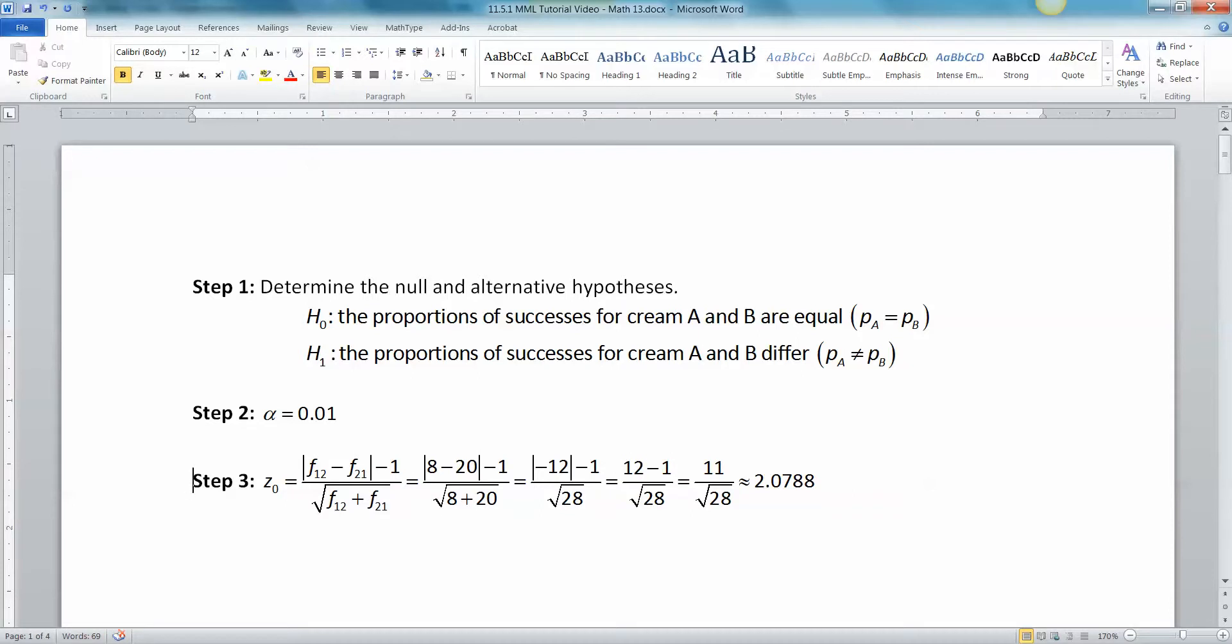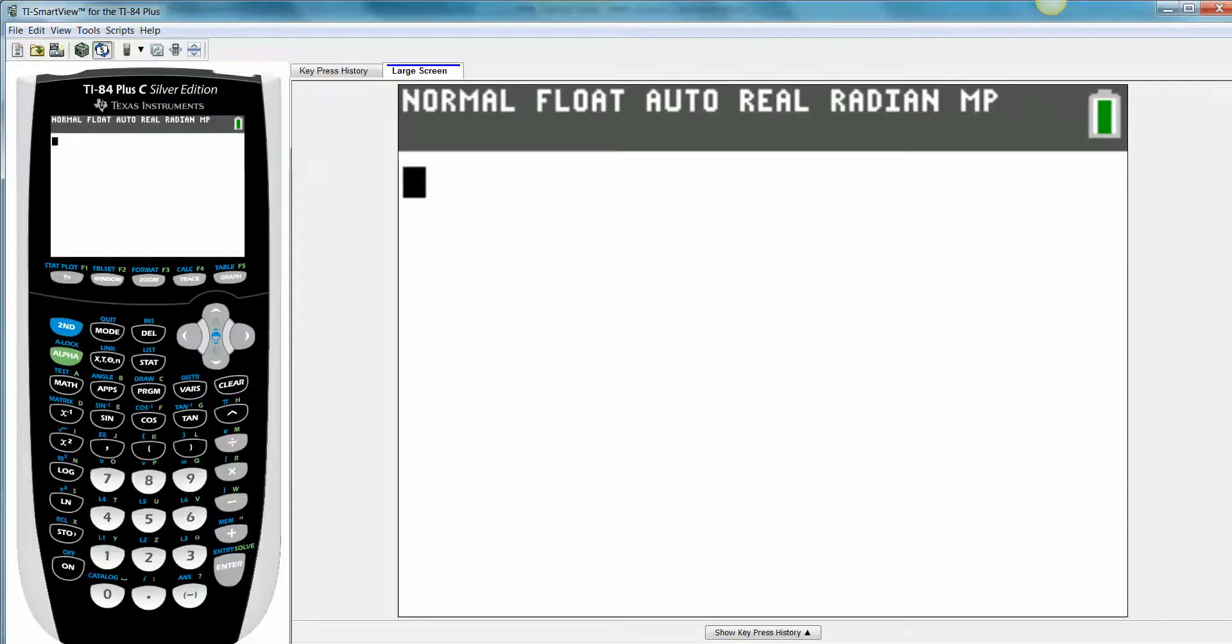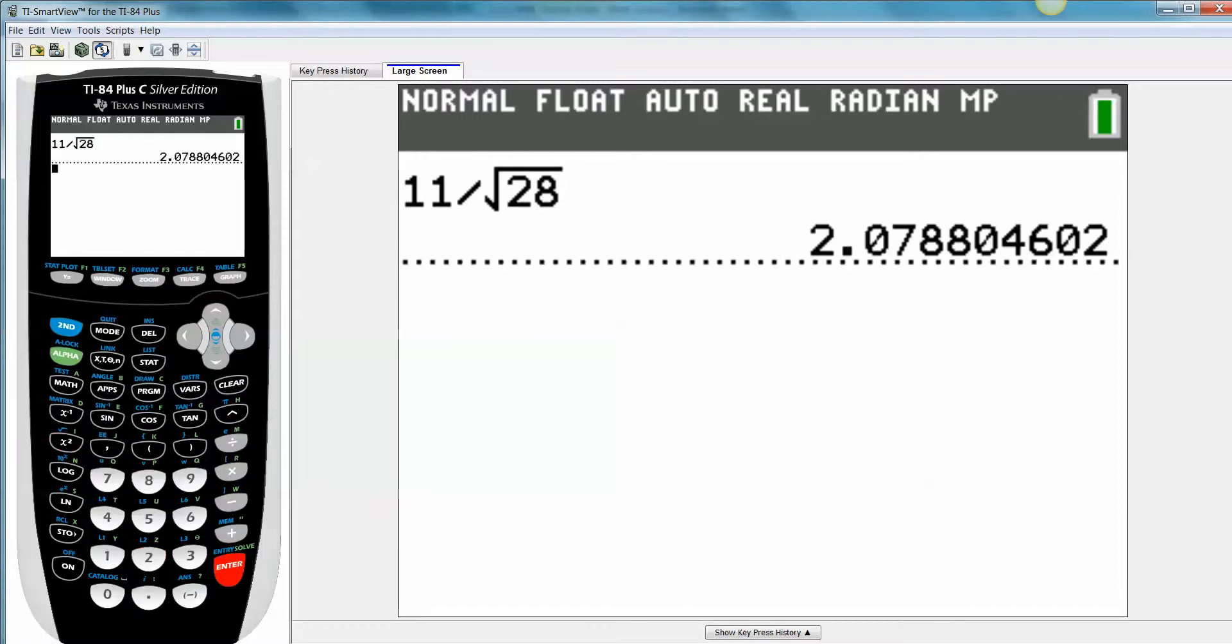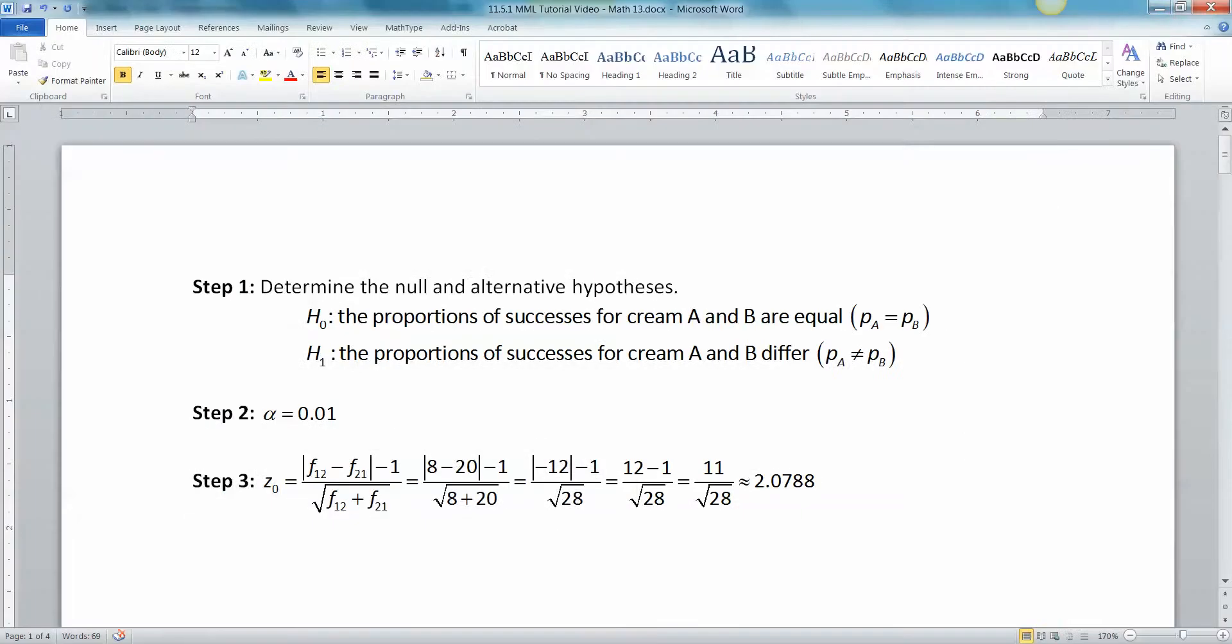Okay, so you take 8, take away 20, and then you take the absolute value of that, so that's negative 12, and then you take the absolute value, it's positive 12. 12 take away 1 is 11, so 11 divided by the square root of 28 is 2.0788 if you do it with a calculator. Let me show you, 11 divided by the square root of 28, there you go. Okay, so that's step 3.